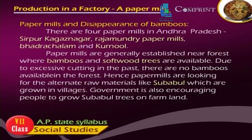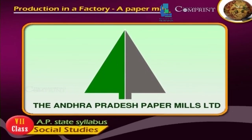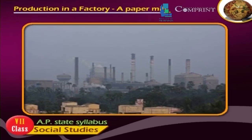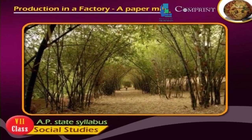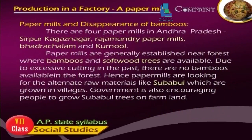Paper mills and the disappearance of bamboos: There are four paper mills in Andhra Pradesh — Sirpur Kagas Nagar, Rajamandri Paper Mills, Bhatrachalam, and Karnaon. Paper mills are generally established near forests where bamboos and soft wood trees are available. Due to excessive cutting in the past, there are no bamboos available in the forest. Hence, paper mills are looking for alternative raw materials like subabul, which are grown in villages. The government is also encouraging people to grow subabul trees on farmland.